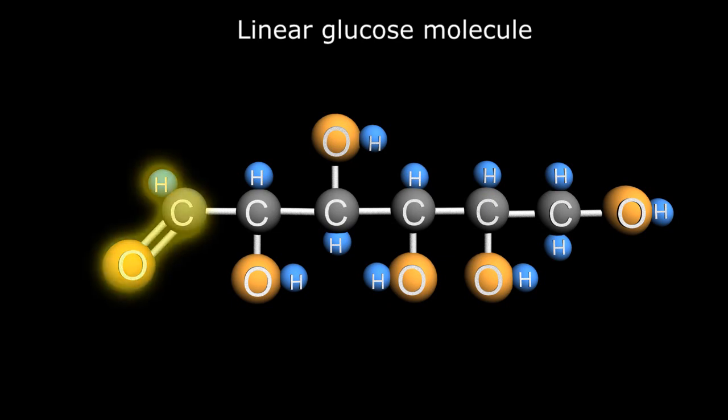The functional group on the linear chain is called an aldehyde and therefore, with its 6-carbon configuration, glucose is referred to as an aldohexose.